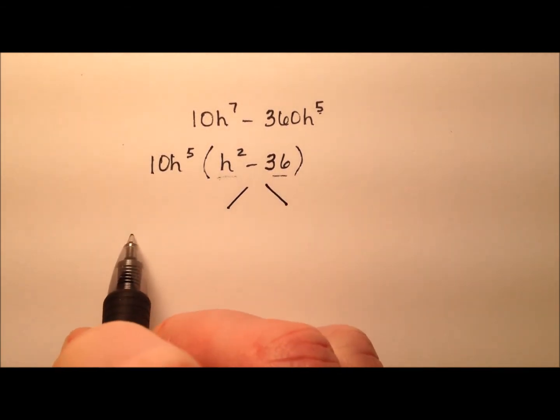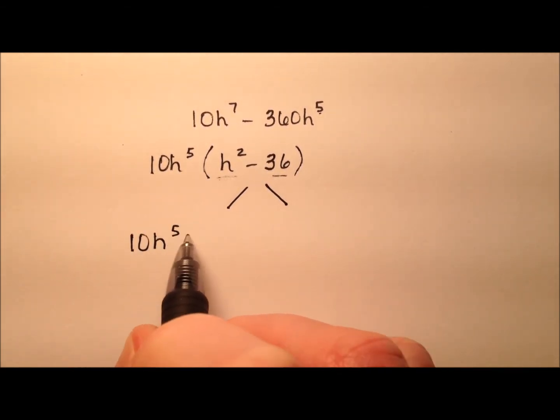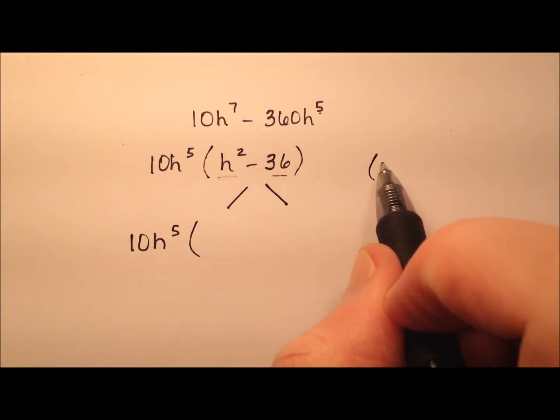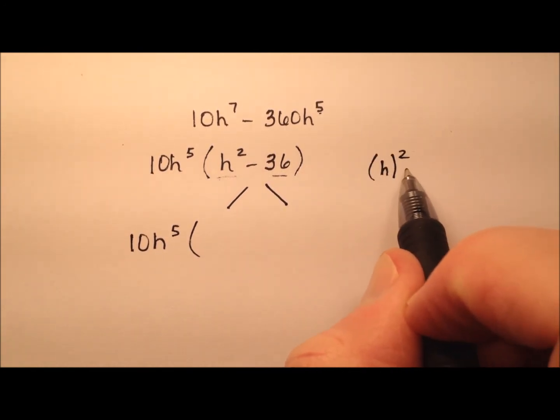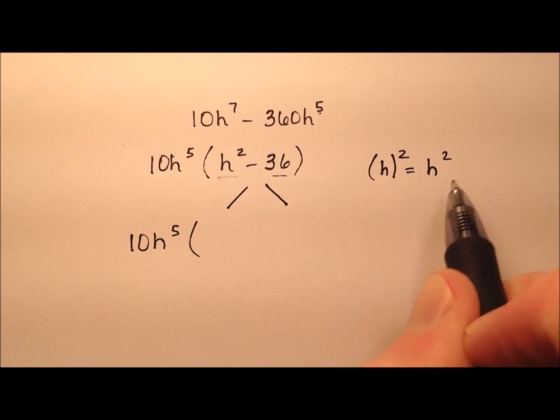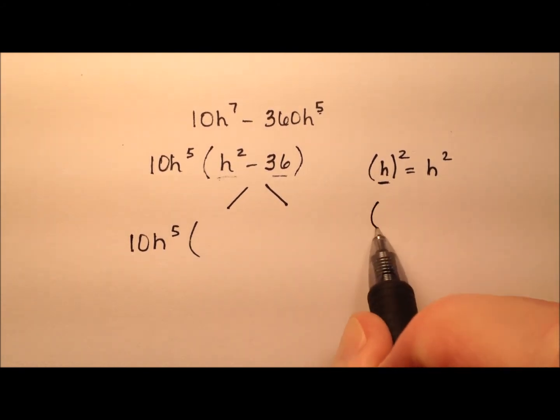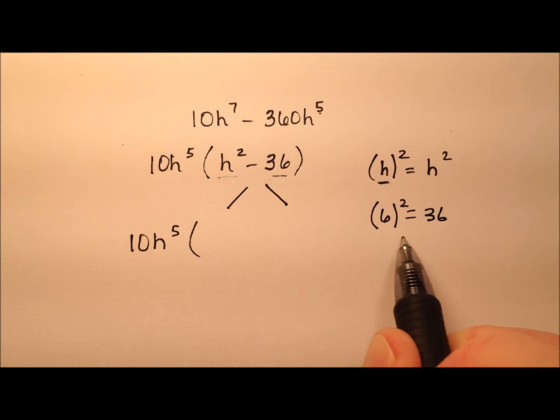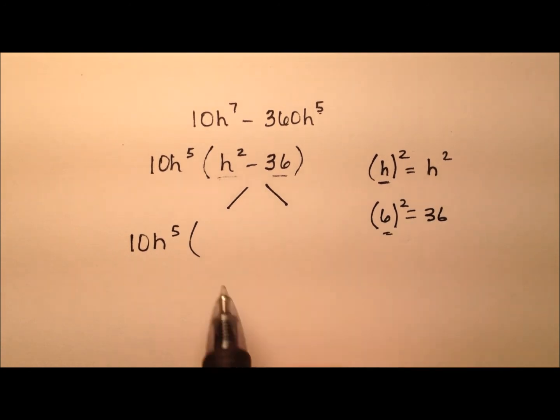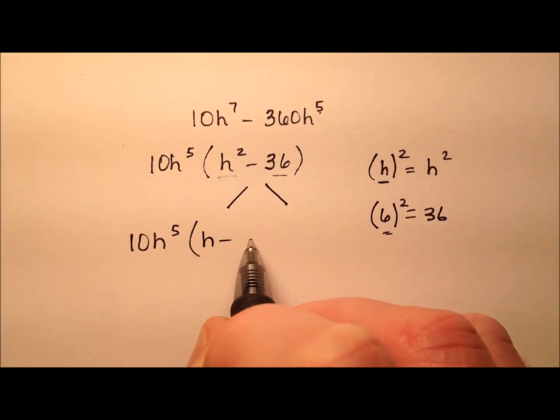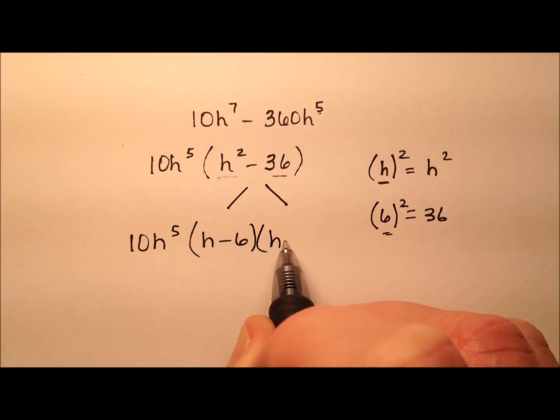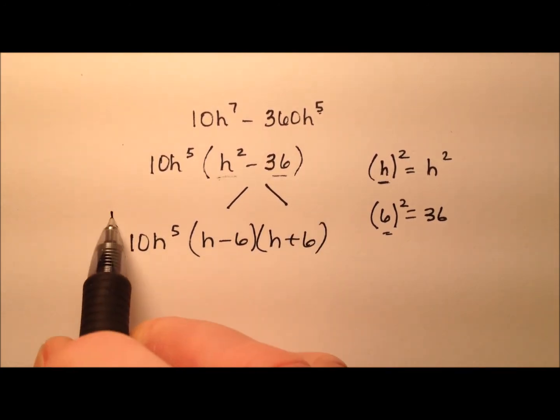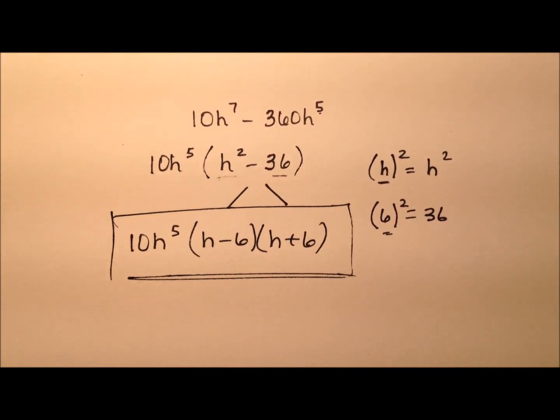We know we can split that up. You can ask yourself, what got squared to give me h^2? It was h. And what got squared to give me 36? That was 6. So I know this will be h minus 6 and h plus 6 for the difference of squares factorization.